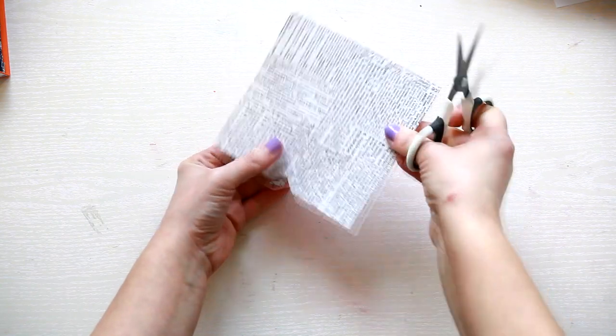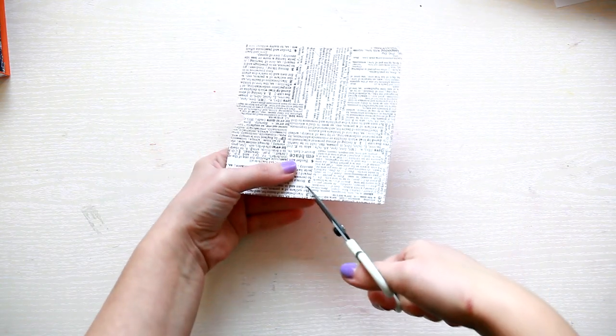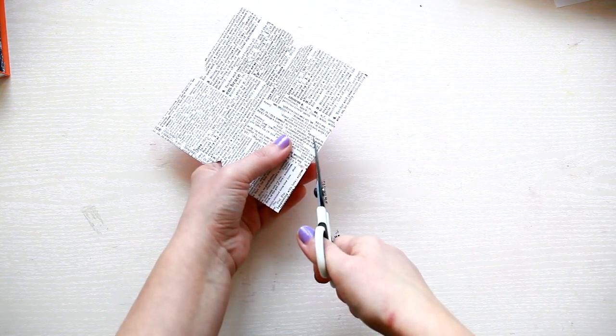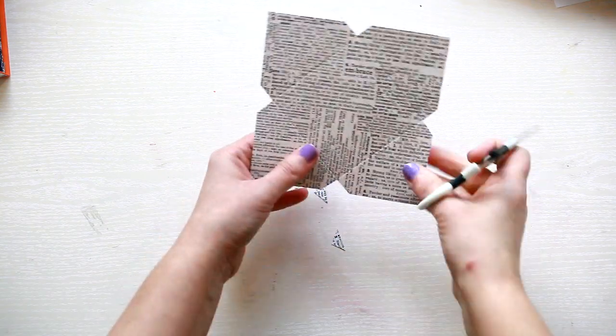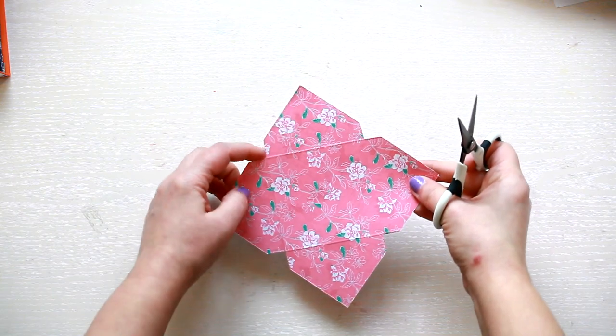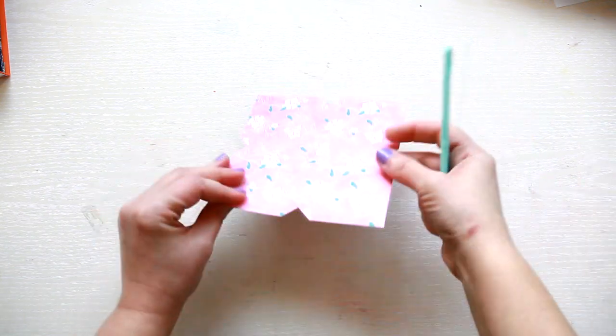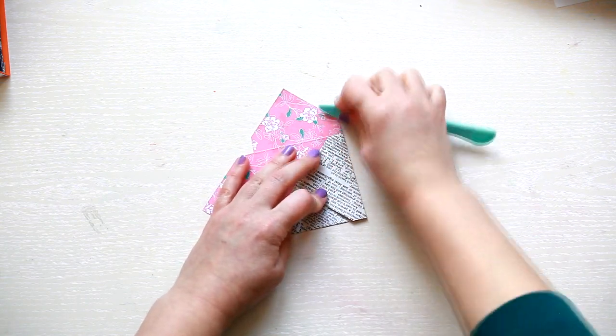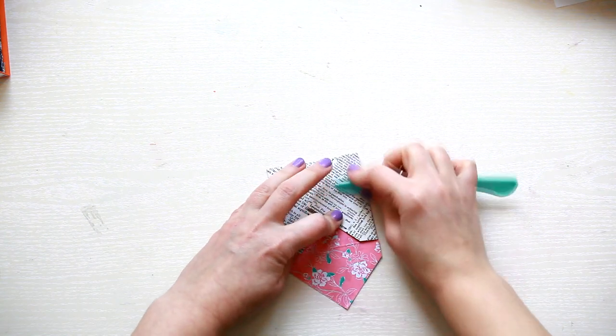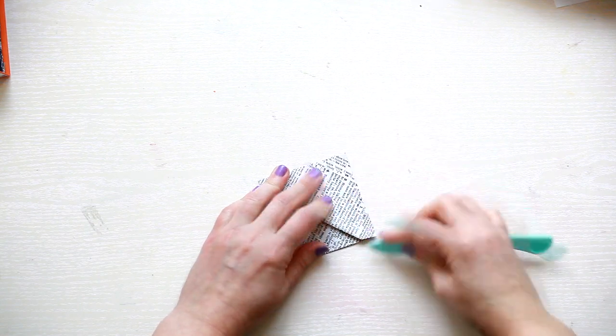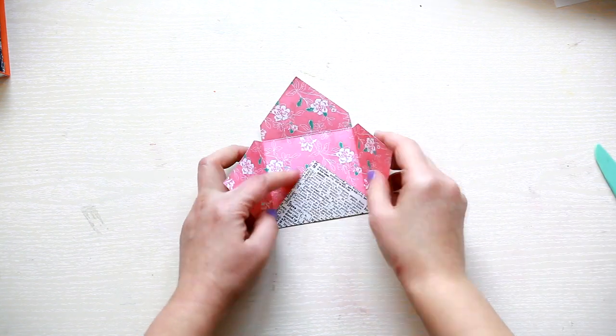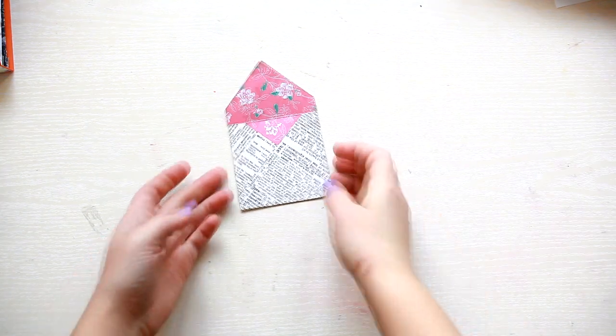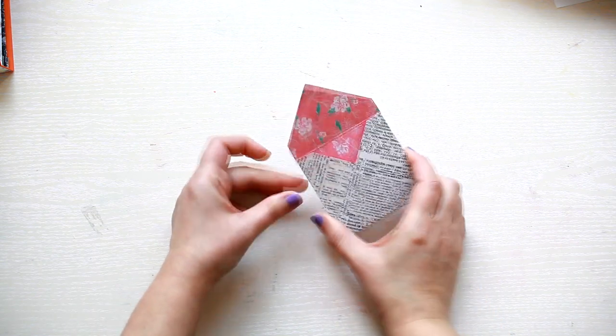Then cut away the corners created by the intersection of the score lines. This is how you will create the basic envelope shape. Then fold and burnish the score lines. Fold three of the flaps and glue them on top of each other. So now you have the envelope which is the perfect size for the tea bag.